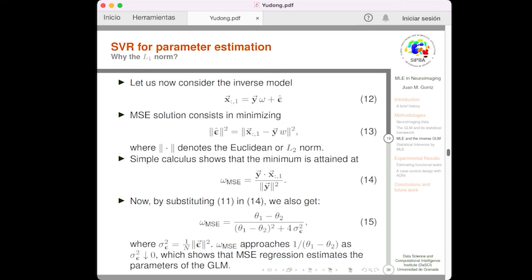Now, let us consider the inverse model. The inverse model is the model where the explanatory matrix is on the left-hand side of the equation. So, if we try to connect this equation with the previous, we are trying to obtain a set of parameters omega, in this case just one parameter, that better explain the column of the centered design matrix. So, we can use the minimum square error solution, the L2 norm solution, that consists of minimizing the Euclidean norm of the vector of error, epsilon hat. So, simple calculus shows that the minimum is attained at this quantity, in equation 14. And now, by substituting equation 11 in 14, we also get the solution, the minimum square solution, for the parameter omega, given in equation 15.